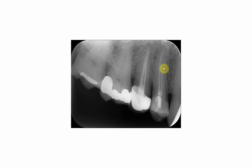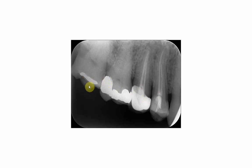To summarize: composite, gutta-percha, metal post, broken file or reamer, PFM, gutta-percha, amalgam, zinc phosphate cement, and composite — these are all the restorative materials identified in this radiograph.